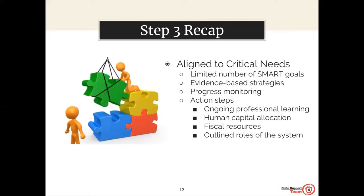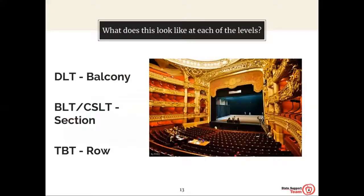At the TBT level, teams will determine the expectations for all adults when implementing the selected strategy, including the specific steps in the process. The work of the DLT, BLT or CSLT, and TBT could be compared to a theater. The DLT should have the perspective of the entire theater—an overarching view. The BLT or CSLT will focus on just one section of the theater, addressing the unique perspectives of their building. The TBT will focus on just their row, paying specific attention to the needs of their teacher team.